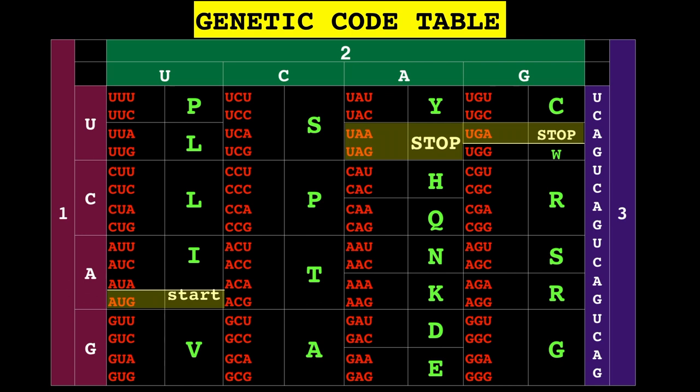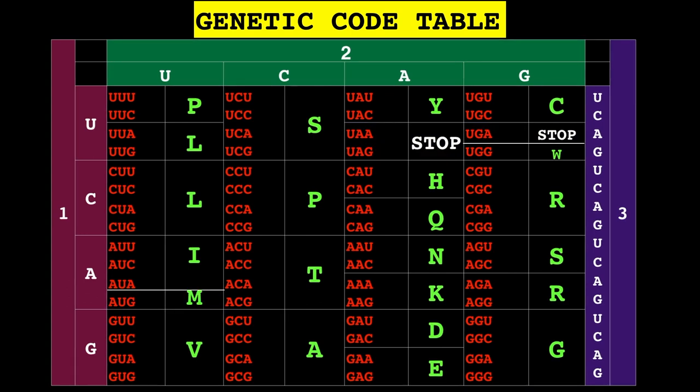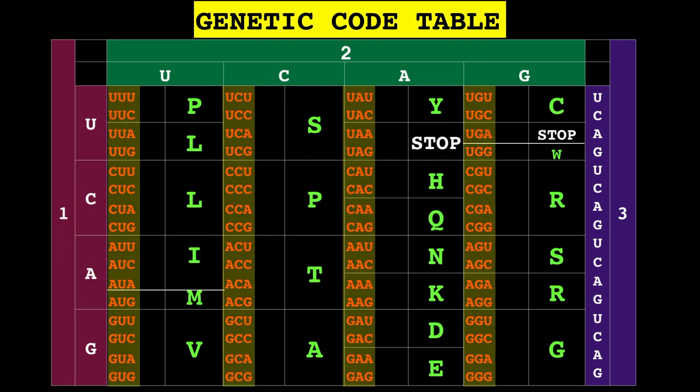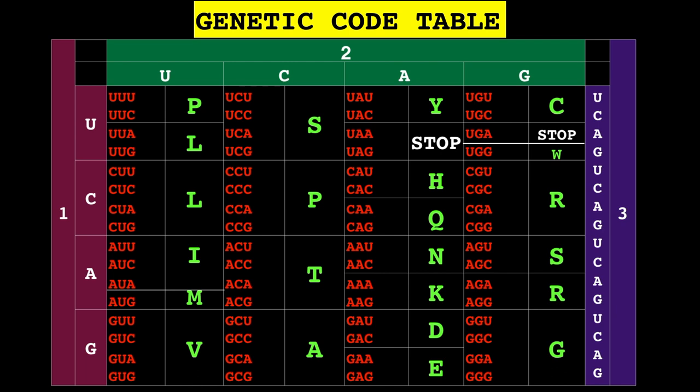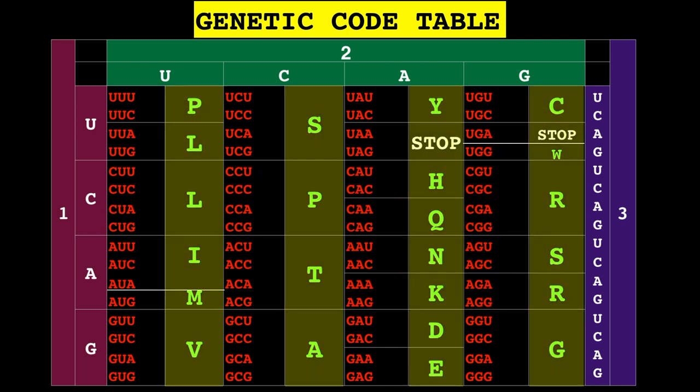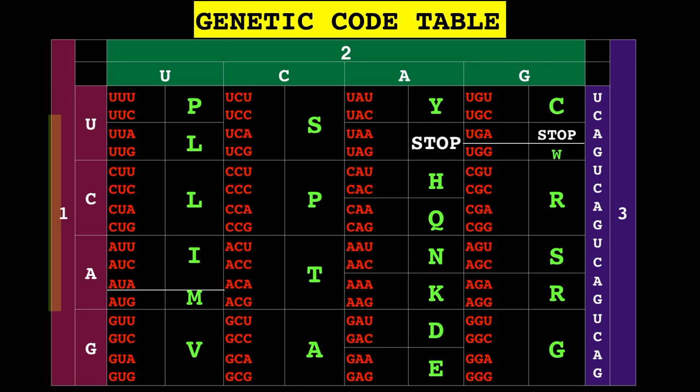It will become less confusing when I use the example so let's explain the table first. The table is basically an easy and straightforward way to find out which codon of the RNA labeled in red color corresponds to which amino acid labeled in green. To do this we need to locate all three nucleotides of the codon.